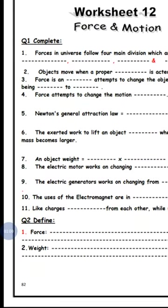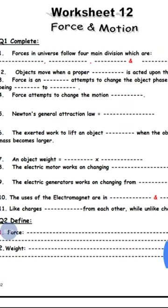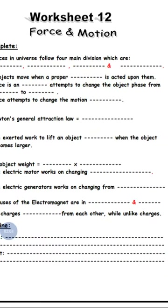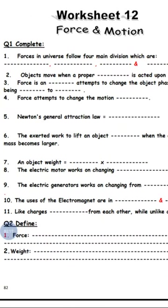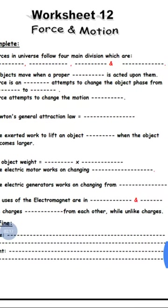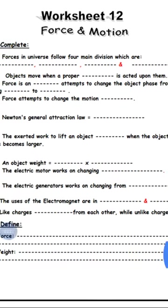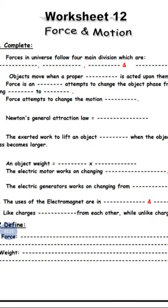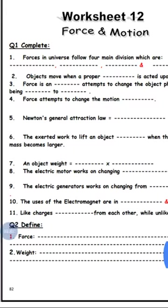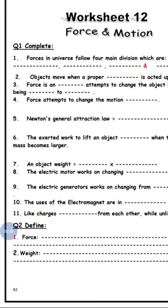Number five: Newton's general attraction law. The law states that weight equals mass in kilograms times the gravitational acceleration. Weight equals mass times acceleration.